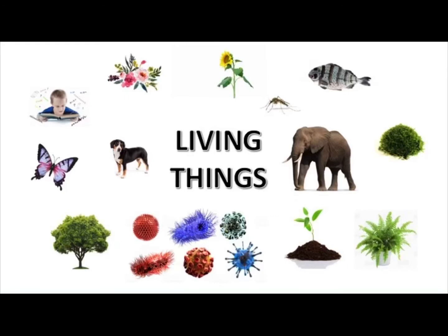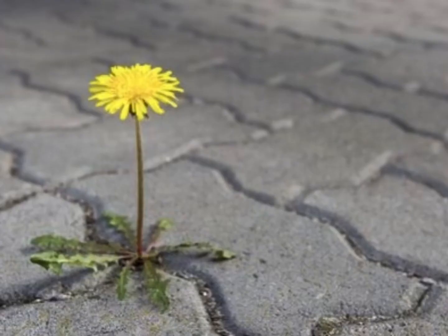Unlike animals and people, plants do not make sounds, and they cannot move from one place to another. Plants need four basic things in order to live and grow: food, water, air, and light.